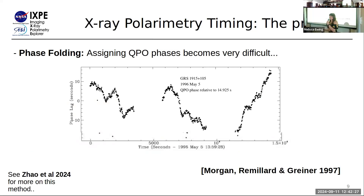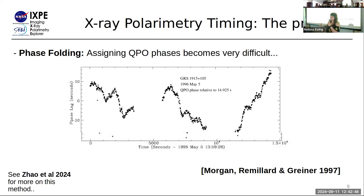Another potential method would be phase folding, but with phase folding you need to assign a phase to each and every event. For periodic signals, the phase moves linearly over time and assignment is easy, but with quasi-periodic oscillations the phase moves in an essentially random walk around this linear increase. So again, it's difficult to assign a phase to each photon, and we need a different way to measure variability.